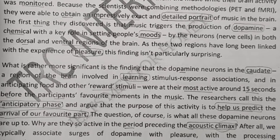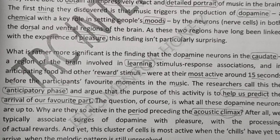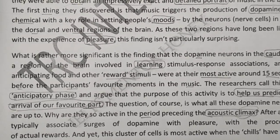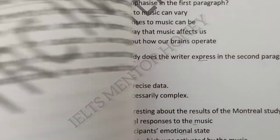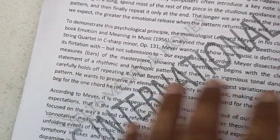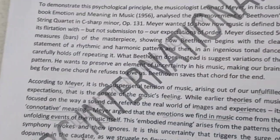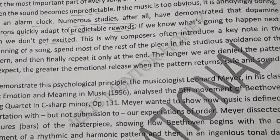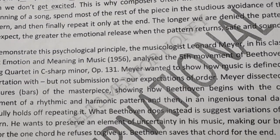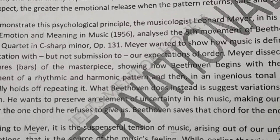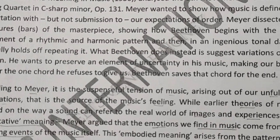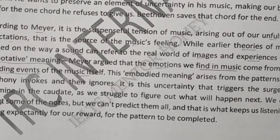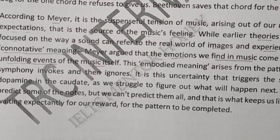In section two, go through the questions again and see what type is easier for you. Always try to solve completion-type questions first, then short-answer questions where you need to find one word, more than two words, more than three words, or a number. Start with these types of questions and decide which are easier and which are harder for you.